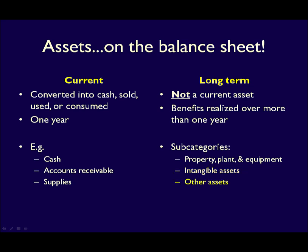Finally, other assets are any assets that last longer than one year but don't belong in property plant and equipment or intangible assets. This is a catch-all category including things such as an accounts receivable that will not be collected for two years, or a prepaid insurance policy that provides protection for the next three years.